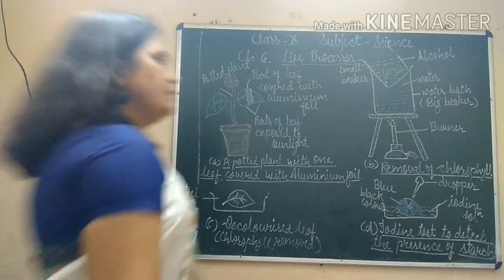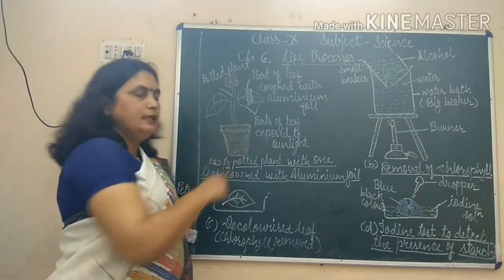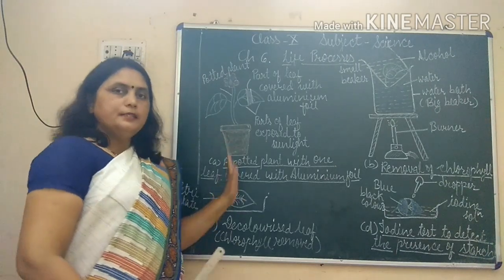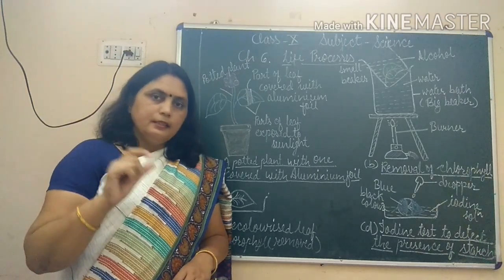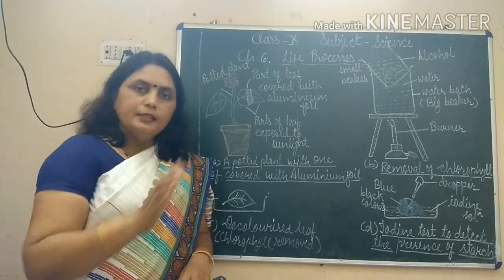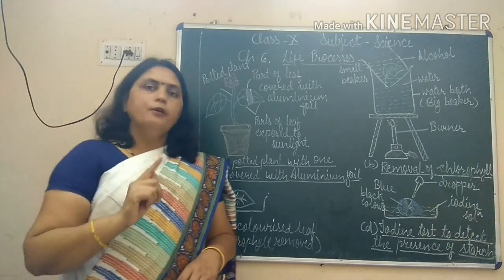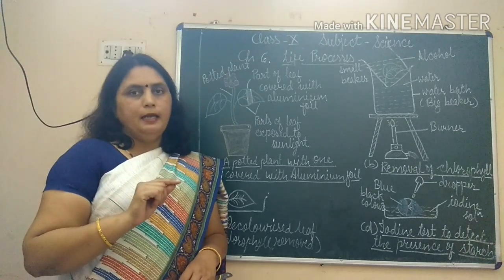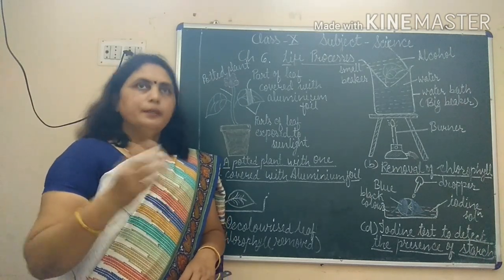Our first experiment is to prove that sunlight is necessary for photosynthesis. Before we start, note that green plants make food by photosynthesis in the form of glucose. This glucose is used by the plant to perform various activities like respiration, transportation, and reproduction.